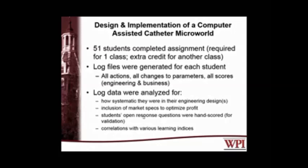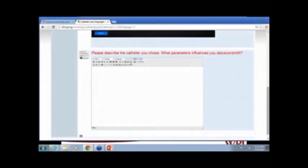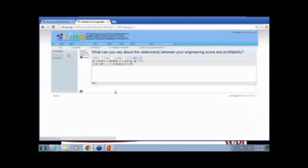When we looked at the log data and started analyzing it, we wanted to know whether students were systematic in their manipulation of variables — did they make big jumps in changing length or try to change things systematically? We wanted to learn whether they included market specs to optimize their profit. We also had open-response questions: in addition to making the catheter, we asked students a few questions. We asked their self-reported analysis of how they chose their catheter and what parameters influenced them, and we got a lot of really good feedback.